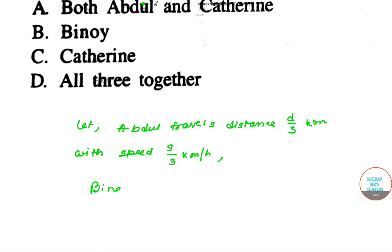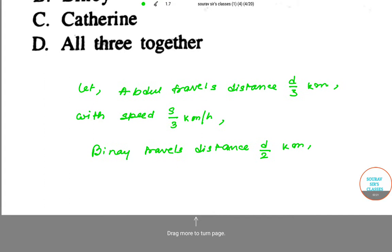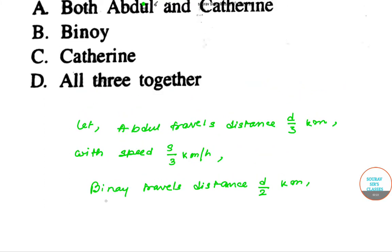Now for Binoy, he travels the distance d/2 km. We can easily assume that d/2 km distance Binoy travels and the speed is 2s/3 km per hour.